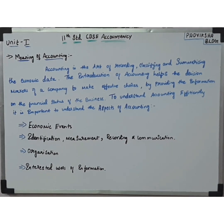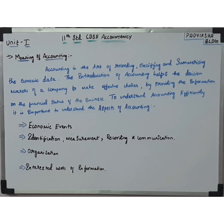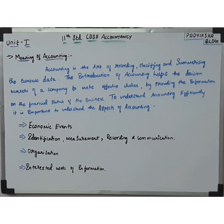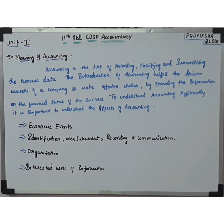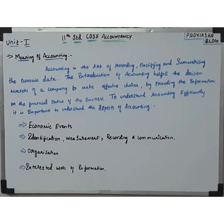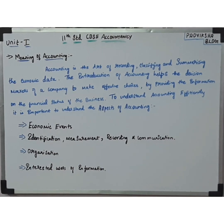To understand accounting properly, we need to look at the aspects of accounting. We have four aspects of accounting: first, economic events; second, identification, measurement, recording and communication; third, organization; and fourth, interested users of information. Let's see what the meaning of each of these four aspects is.